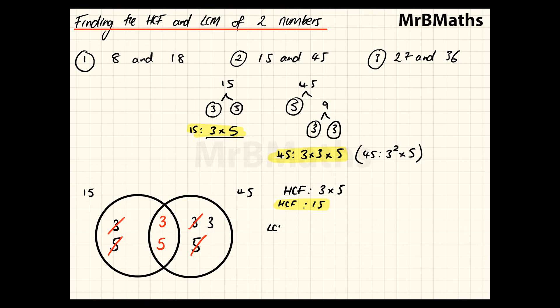But LCM, you then write all of the numbers, so 3 times 5 times 3. So, your LCM is 15 times 3, which gives you an LCM of 45. So you should have also got 45 as your LCM for 15 and 45.